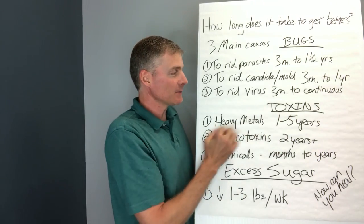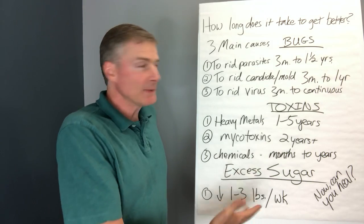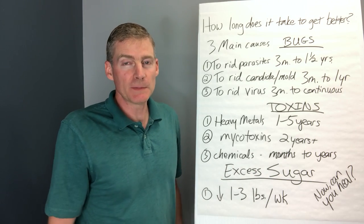Toxins. To get rid of heavy metals, it takes one to five years. And maybe even longer. If you've got lead in the bones, it could be ten years.